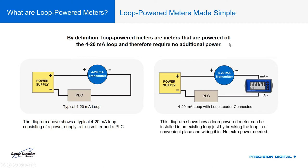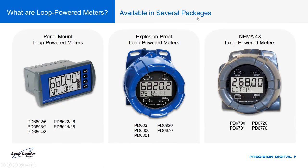There are several different kinds of loop power meters from Precision Digital. You've got standard panel mount meters like the Loop Leader, which installs in an eighth-DIN cutout. Because loop power meters are so convenient, they're also available in explosion-proof housings with hazardous area approvals, so you can put the display anywhere in a hazardous area without worrying about power supplies. We even have a NEMA 4X plastic enclosure ready for field mounting — you can put it anywhere you want to see that information.